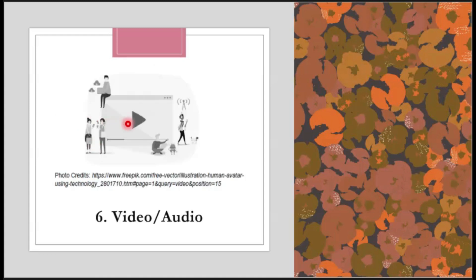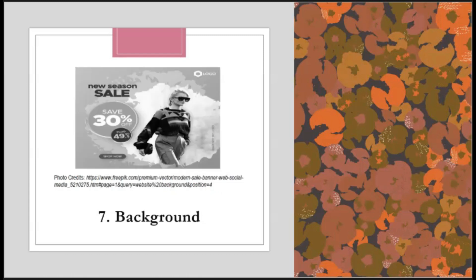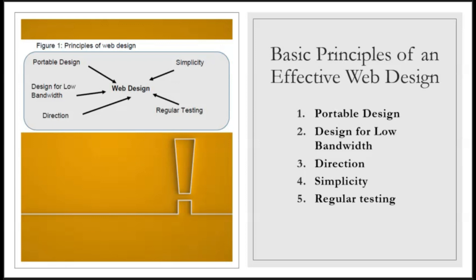Number six: video or audio. There are sites that use audio and video to help visitors better understand what they are selling or pitching. These web design elements really help visitors, especially websites that offer tutorials on a certain subject. Lastly, background. Texture or background gives a more appealing look to your website and provides a feeling of a surface underneath. With the use of elements of web design, your website will be more appealing to users, but you need to make sure it is functional, responsive, and useful. To create a usable and effective website, you must follow the basic principles of effective web design: portable design, designed for low bandwidth, direction, simplicity, and regular testing.